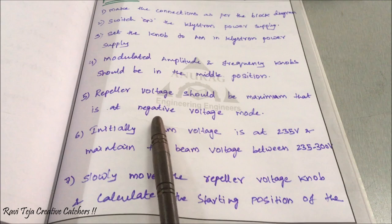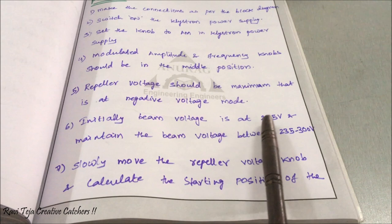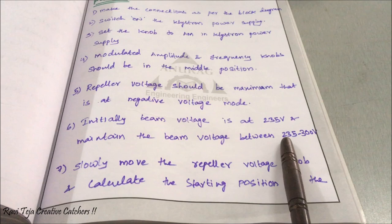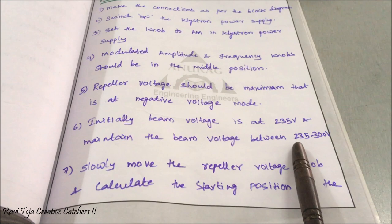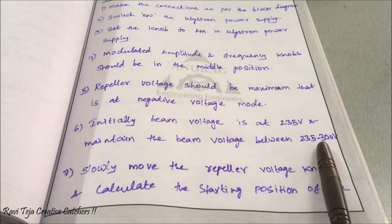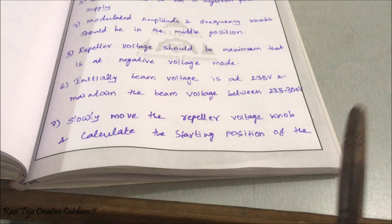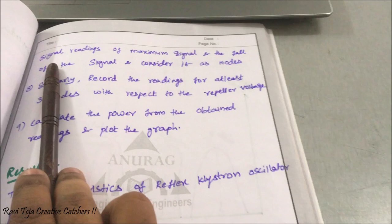The reflector voltage should always be at maximum, such that it will be in negative voltage mode. Initially, beam voltage is at 235 volts. We need to maintain beam voltage between 235 volts to 300 volts. We will be rotating the beam voltage knob to around 275 volts to maintain it in that range.